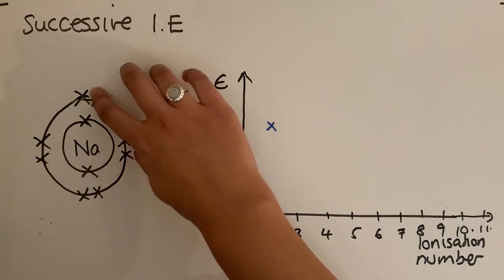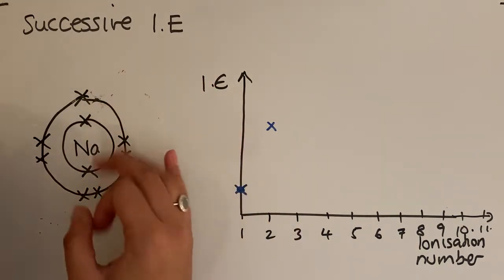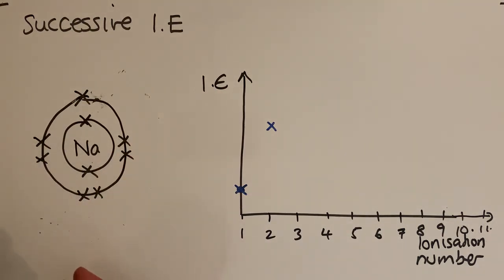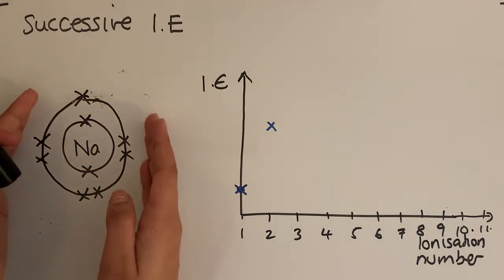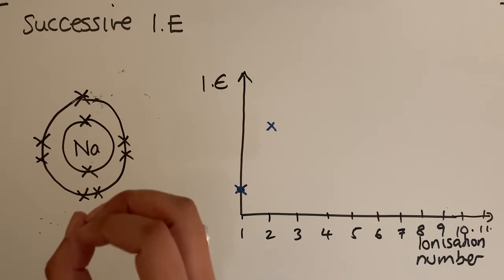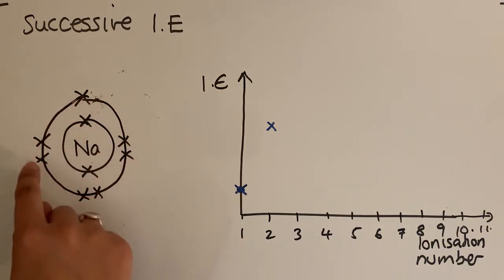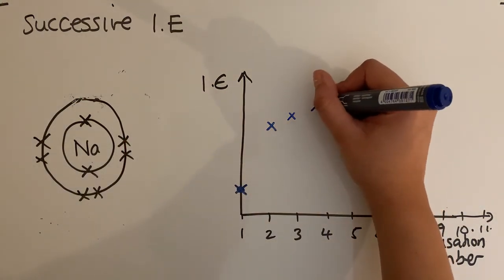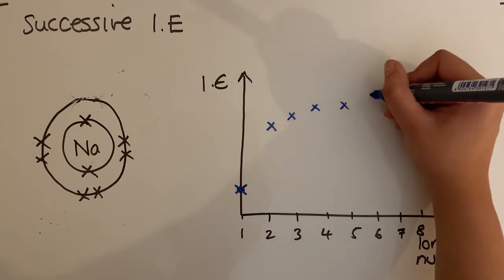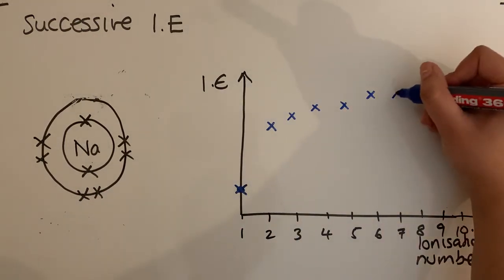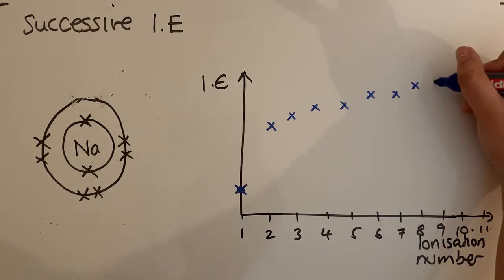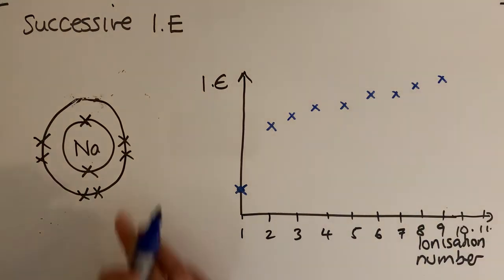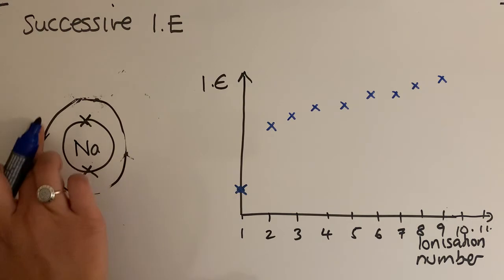As electrons are removed from the same shell, the shielding stays the same and the nuclear charge stays the same, but the remaining electrons get pulled slightly closer to the nucleus each time. So the third through ninth ionization energies show only a slight gradual increase — slightly more energy required with each successive removal within the second shell.